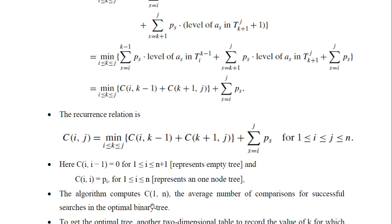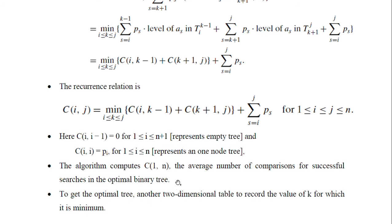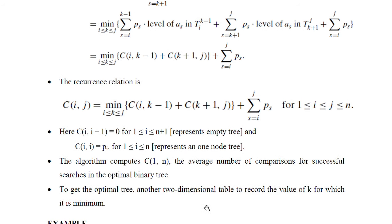Now we are going to compute C(1, n). We also maintain a second two-dimensional table to record the values of k for which C(i, j) is minimum — this is the root table. Let's see an example.